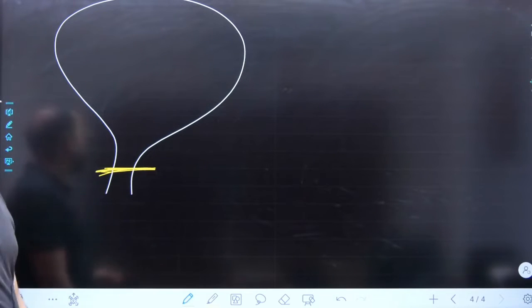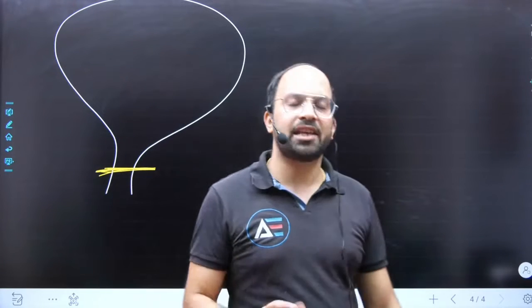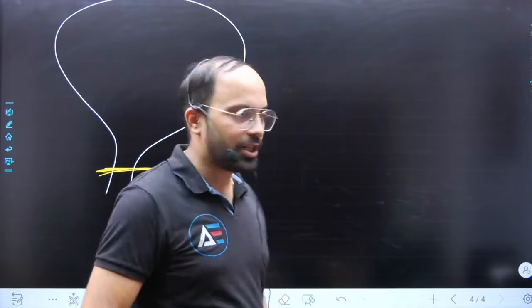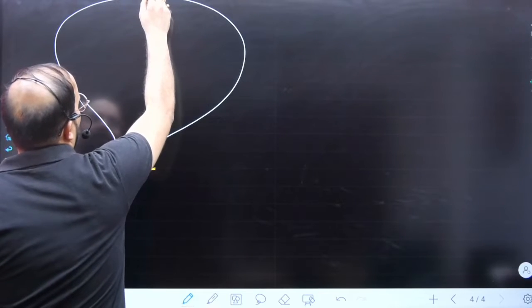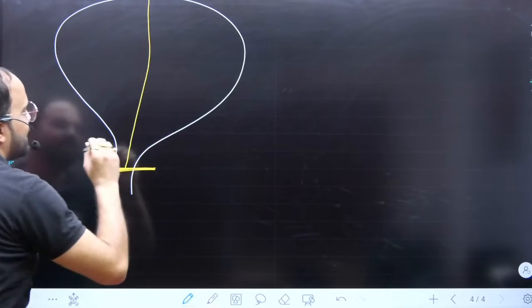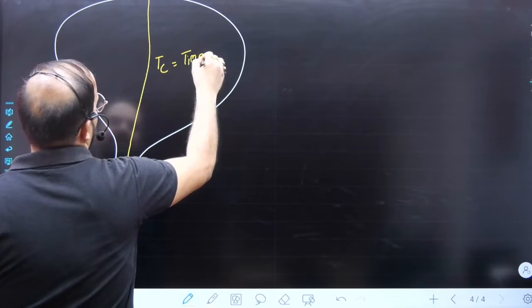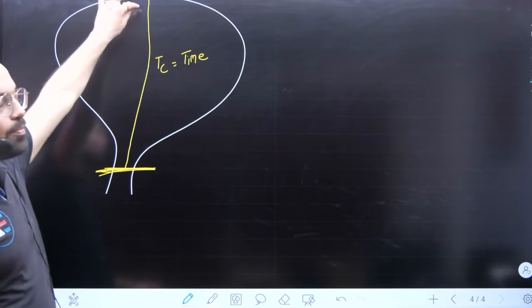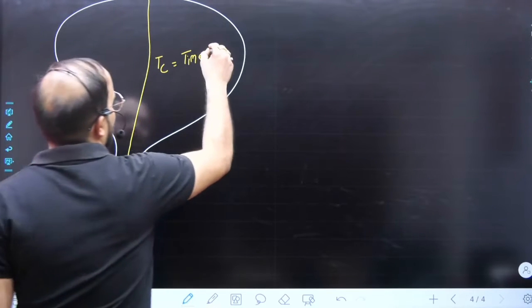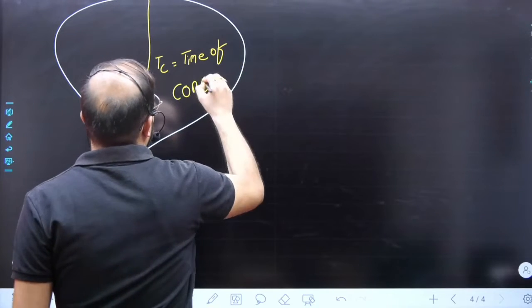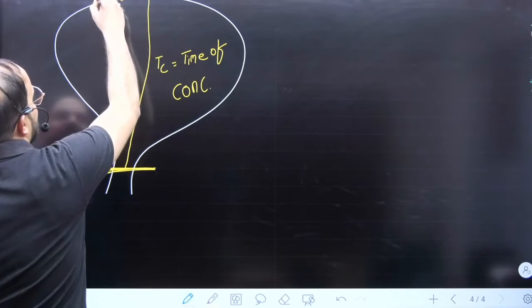This is your catchment — water is contributing to some stream. If water falls here, the time it takes to come to this point is called time of concentration. The time which the water from the farthest point takes to come to this point is called time of concentration. All these points take the same time of concentration.